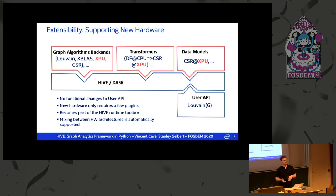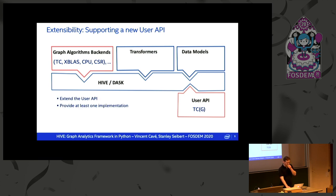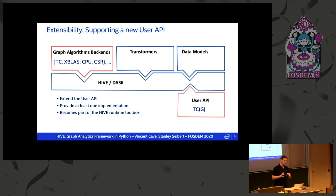This also allows you to mix hardware architectures. If you have different graph operations, maybe you do one on the CPU and the next one on the GPU. It's a great way to get portability — if today I'm running on a box with a GPU and using a GPU algorithm, but tomorrow I'm not, as long as I have an implementation that covers the CPU, my code would still run. For adding a new user API, it's the same thing — a subset of plugins you need to work with. For example, I want triangle counting on the graph; I just provide at least one implementation. It becomes part of the API and runtime toolbox, so people can plug in their algorithm and leverage all the work done on the backend.